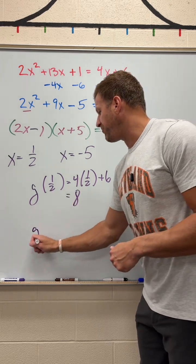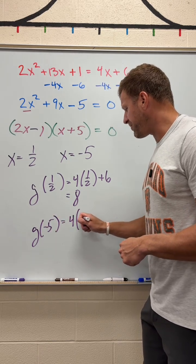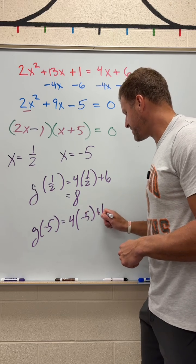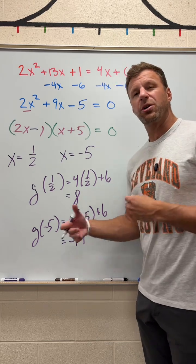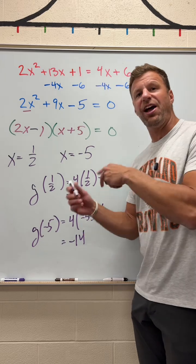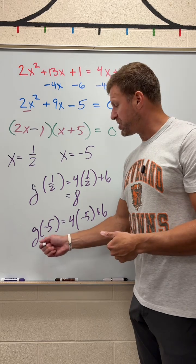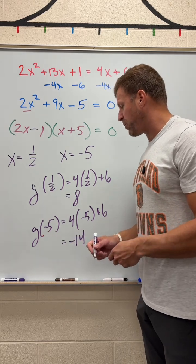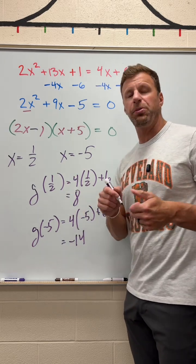If I plug negative 5 in to get the other answer, I'm going to take 4 times negative 5 plus 6. That's negative 20 plus 6, which is negative 14. And if you go back and look at the choices, there were a couple of distractors there, where we see 5, positive 5, negative 14, positive 14, but we don't see the exact combination of negative 5 comma negative 14. So, the only answer that's listed is 1 half comma 8. Hope you got that one right.